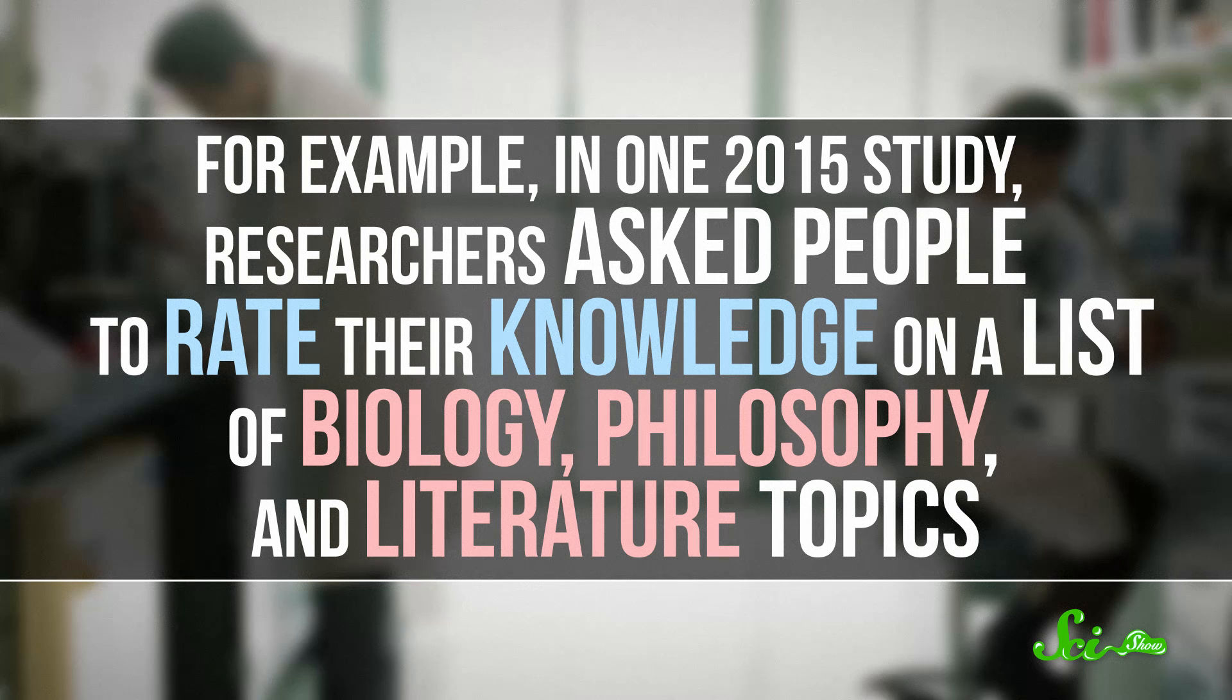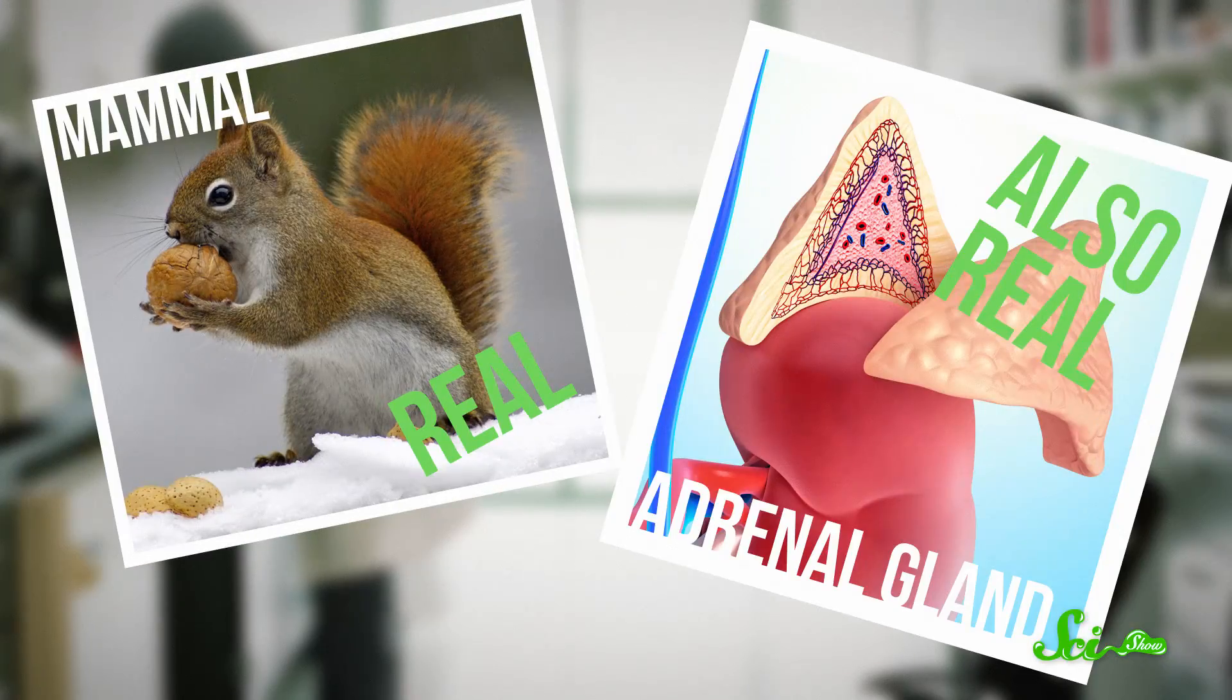For example, in one 2015 study, researchers asked people to rate their knowledge on a list of biology, philosophy, and literature topics. Some biology terms were like mammal or adrenal gland. But secretly, there were also some topics in the list that people couldn't have known anything about because researchers just made them up,